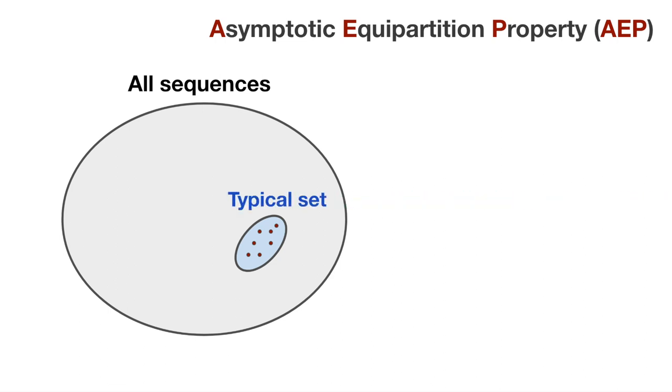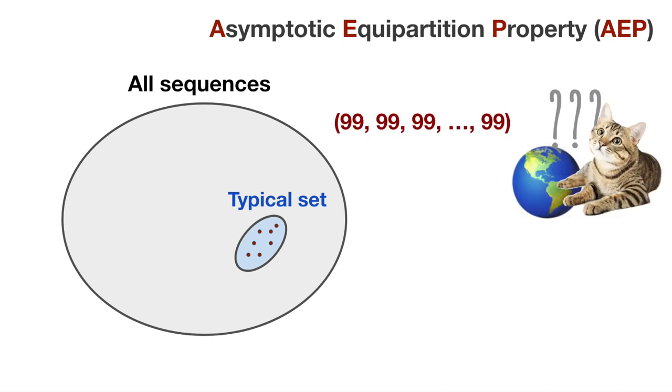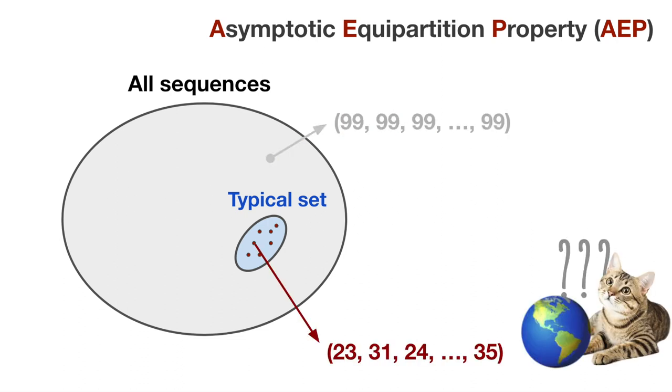A special subset is called the typical set. Intuitively, the sequence of 99 meows for a whole bunch of days is outside the typical set. But we can see an example of a typical sequence, too. Maybe Ella has a quieter day with 23 meows than a loud one, and so on.